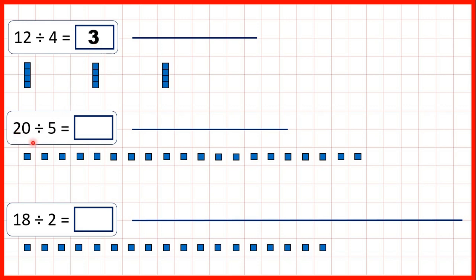Now we have 20 divided by 5. So we have 20 counters. How many groups of 5 can we make from 20 counters? We can make 1, 2, 3, 4 groups. So our answer is 4.